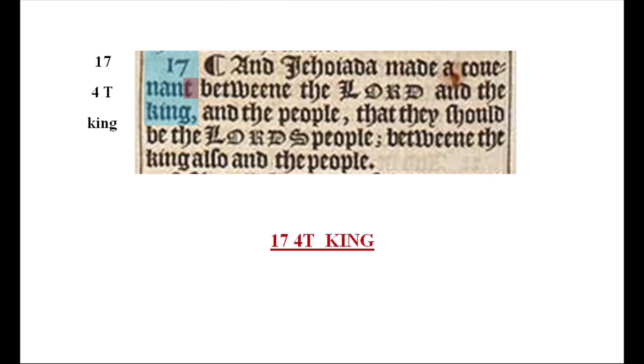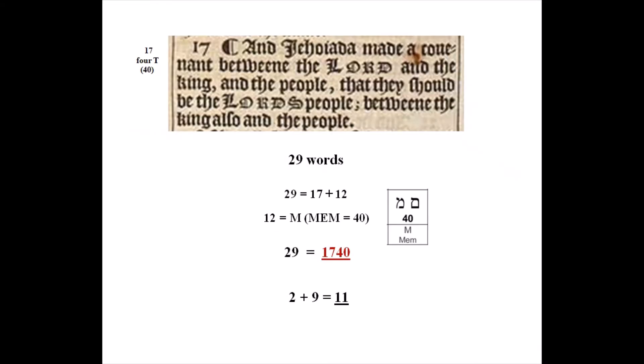1740 is Edward de Vere's URL and code number. Counting the words of the verse, including the allusion to 40, there are 29 words. 29 is equal to 17 plus 12. With gematria, the twelfth letter is M; in Hebrew, M is mem, which is equivalent to 40. So 29 is 17 plus mem, or 1740, found throughout the de Vere Shakespeare codes to indicate his URL and code number. Also, 2 plus 9 equals 11.